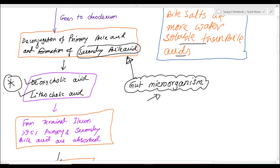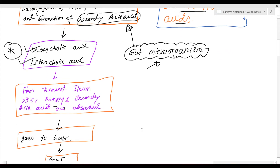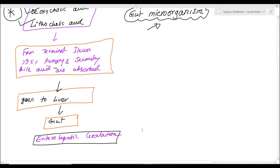From the terminal ileum, about 95% of primary and secondary bile acids along with their bile salts are absorbed. The absorbed bile salts and bile acids then go to the liver, and again they are secreted into the small intestine through the common bile duct. This is called enterohepatic circulation.